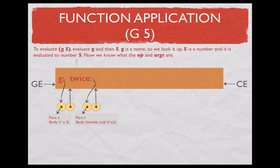Let's see what happens with a simple compound expression consisting of g and 5, evaluated in this particular state shown in the environment diagram. First we evaluate g, then we evaluate 5. Evaluation of g gives us the procedure on the left; evaluation of 5 gives us the number 5. At this point we know what g is and what the value of 5 is — we see that g is a procedure, so we go further.